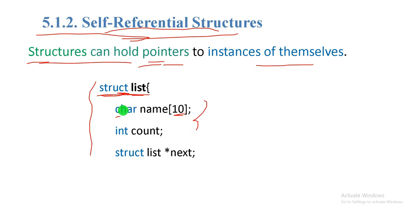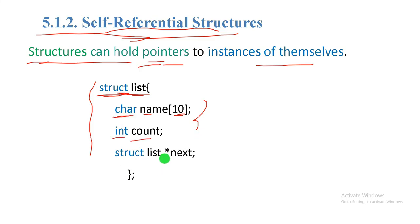An aggregate data type can hold different data types. For example, a struct list may contain a name, an integer count, and a self-referential pointer — 'list asterisk next' — pointing to the next instance.